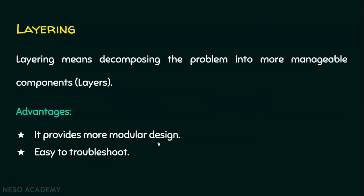First, it provides more modular design. In computer science, we know very well that modularity has its own advantages — where a big problem is broken into smaller problems and we are able to solve them effectively to get the solution for the big problem. Likewise, in computer networking also, we are going to use such kind of modular design. Second, it is easy to troubleshoot. Suppose if we have five layers and there is a problem in one layer, we need not check other layers. We can just focus on the layer which has encountered an error.